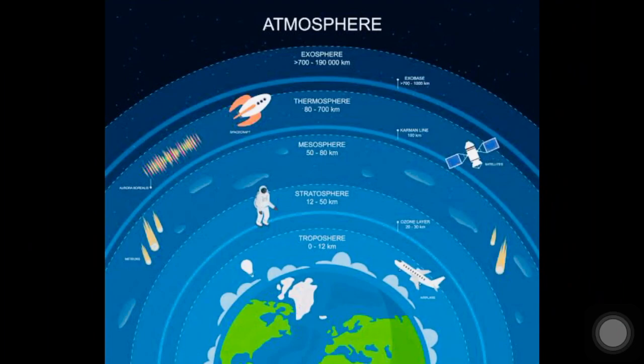Mesosphere is the third layer in the earth's atmosphere. It extends up to 80 kilometers from the surface and lies above the stratosphere. In this layer, temperature decreases with the increase in altitude. This layer has the coldest temperature in the atmosphere.